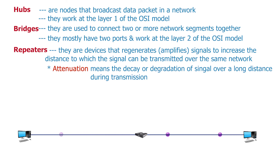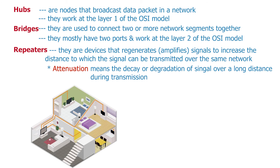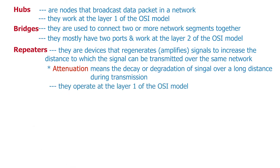A real-world example is in your home or office network: you will notice that devices far down the stairs or even upstairs, far away from the router, are not able to access the network or have weaker signals. In this case, you can connect a repeater and place it at a vantage point to solve this problem. A repeater operates at layer 1 of the OSI model. There are many different types of repeaters depending on a particular field of work. With respect to networking, we have wired repeaters and wireless repeaters.